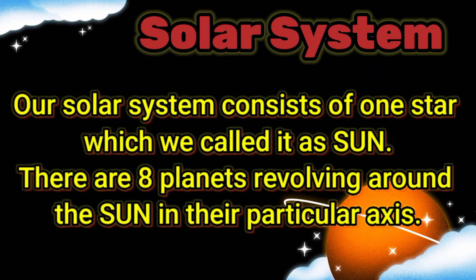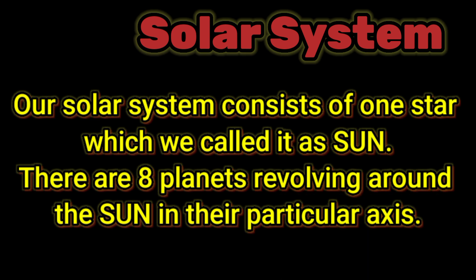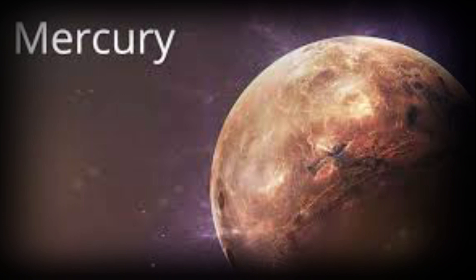Our solar system consists of one star, which we call the sun. There are eight planets revolving around the sun in their particular orbits. These planets are Mercury,